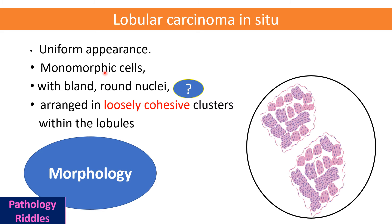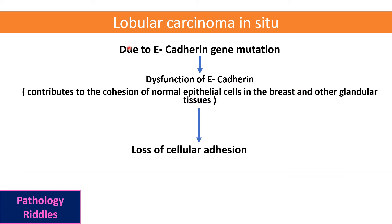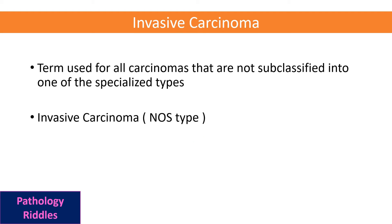LCIS cells are monomorphic with bland to round nuclei, arranged in loosely cohesive clusters within the lobules. In lobular carcinoma in situ, there is a mutation of the E-cadherin gene, causing dysfunction of E-cadherin and loss of cellular adhesion, which leads to these loosely cohesive clusters of cells.